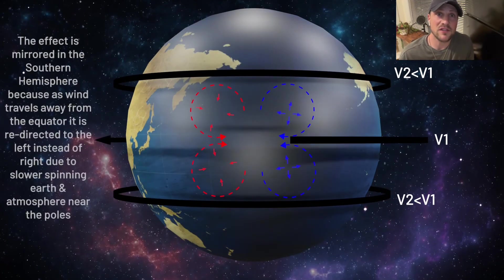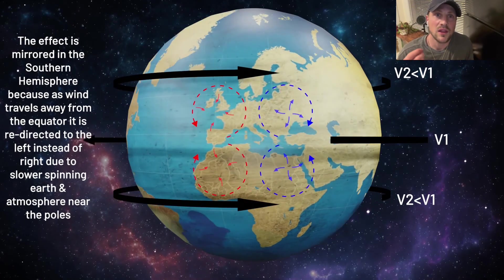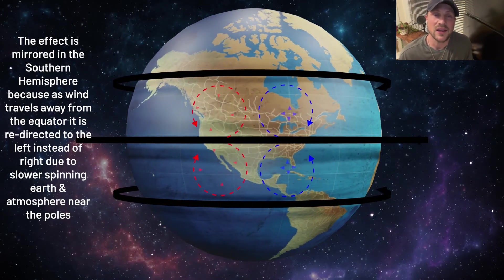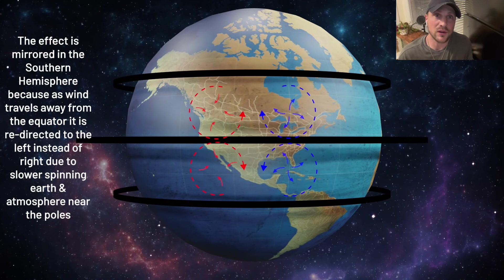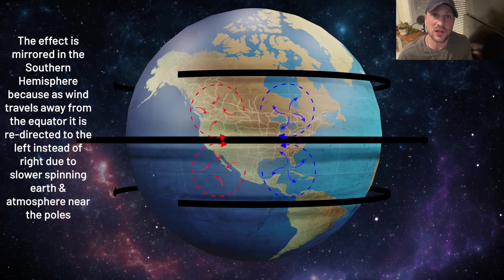And then in the southern hemisphere, the effect is mirrored. This is because in the southern hemisphere, the wind travels away from the equator and it is redirected to the left instead of right, again, due to the slower spinning earth and atmosphere near the poles because of that change in rotational velocity.